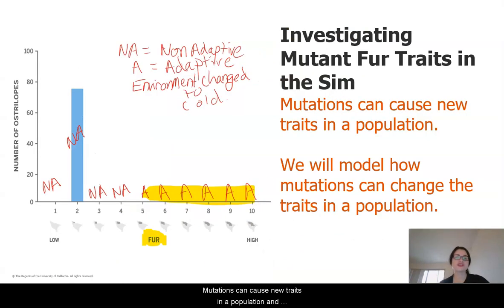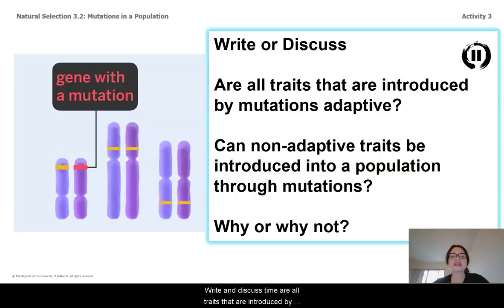So, mutations can cause new traits in a population, and we're going to use the sim to model how mutations can affect the traits seen in a population. But, write and discuss time. Are all traits that are introduced by mutations adaptive? Can non-adaptive traits be introduced into a population through mutation? Why do you think that? Go ahead and pause for a quick sec.